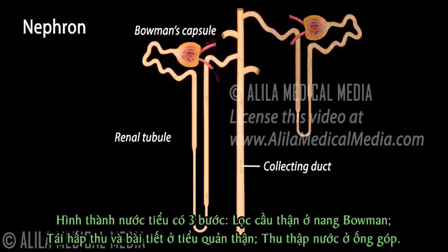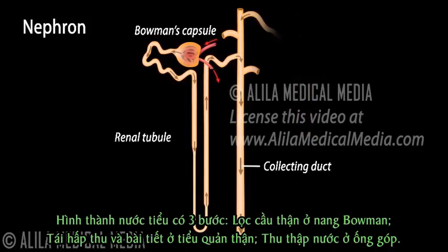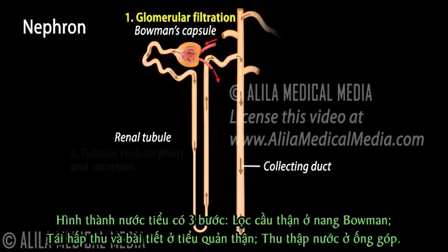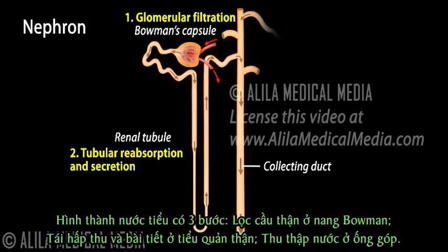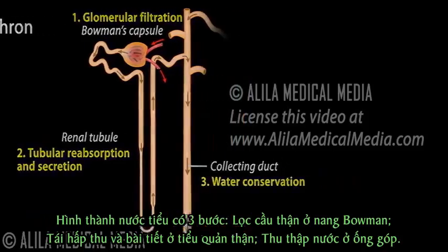There are three steps in the formation of urine. Glomerular filtration takes place in the Bowman's capsule. Tubular reabsorption and secretion occur in the renal tubule. Water conservation happens in the collecting duct.